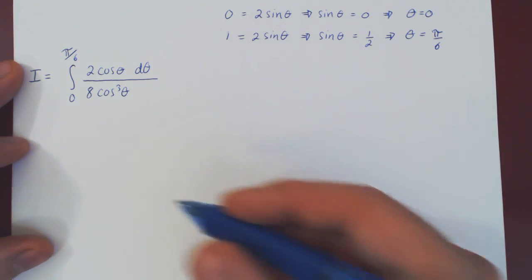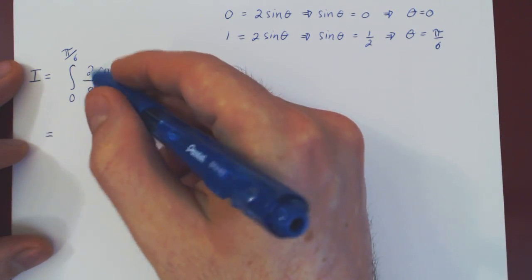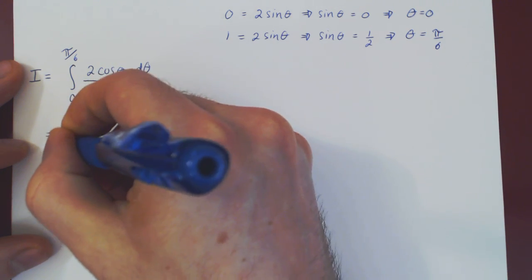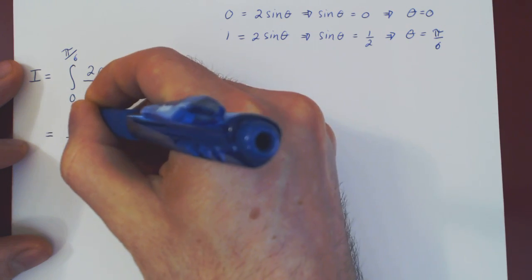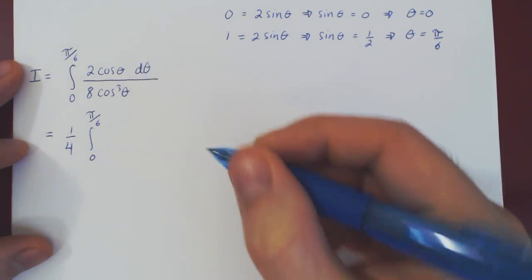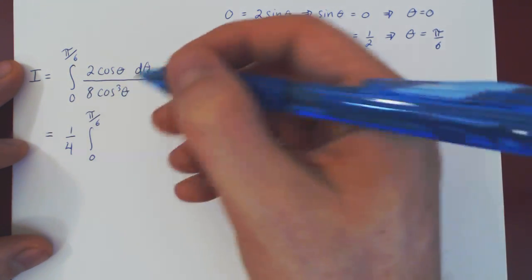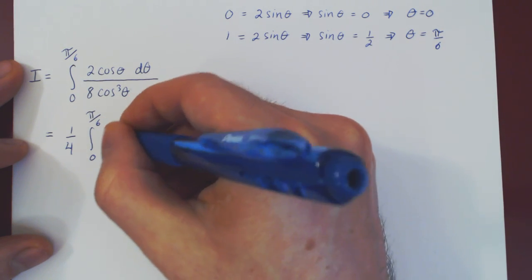So, let's simplify a little bit. 2 over 8 is 1 quarter. We can factor this outside as it is a constant multiple. And if you look here, we have cos over cos cubed. If you cancel one of the cosines, you're left with 1 over cos squared.